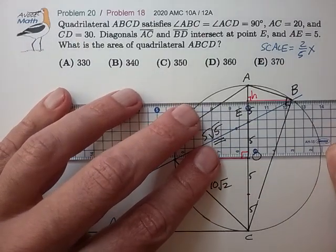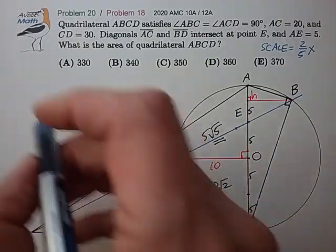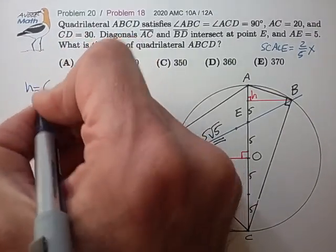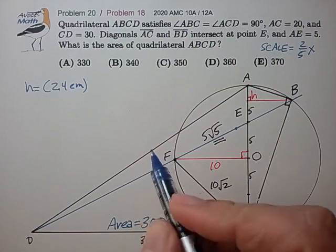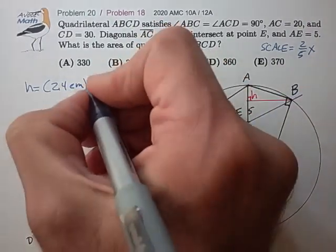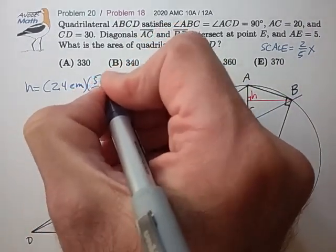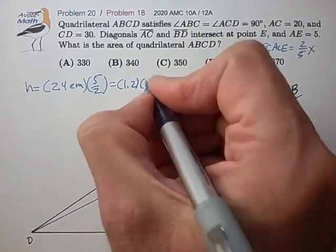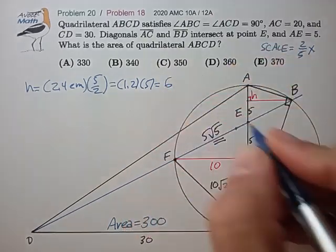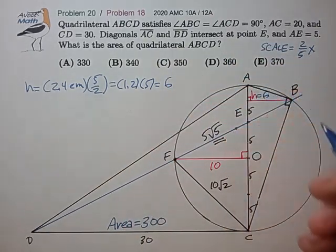And we see that that altitude measures very close to 2.4 centimeters. Multiplying by the inverse scale factor of 5 halves takes us back up to the original units of the drawing. 1.2 times 5, 6. So H is equal to 6.